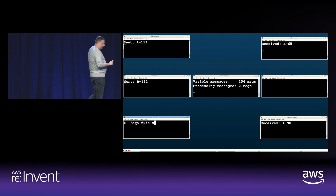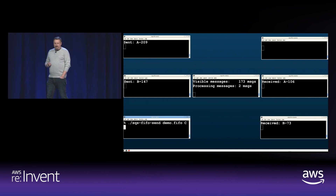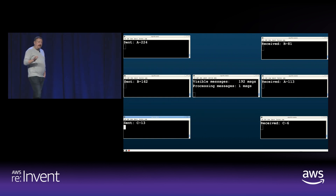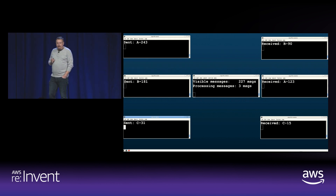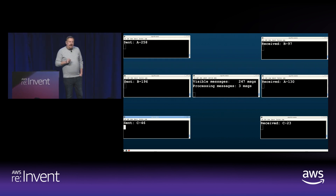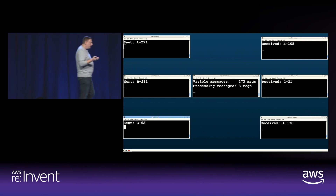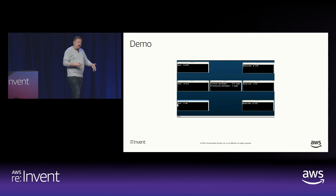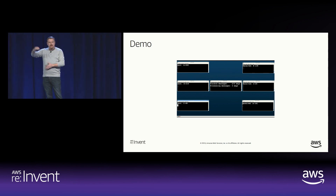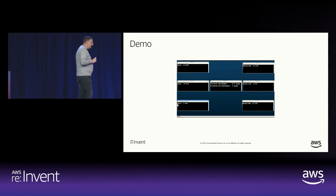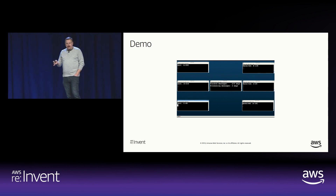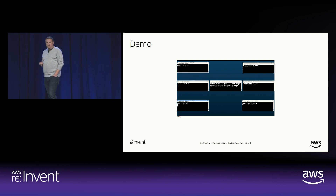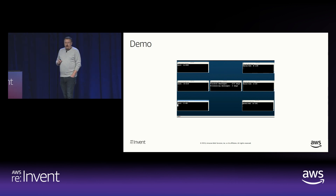A demo shows SQS FIFO behavior. With one producer sending messages labeled A, only one consumer works on the next available message at a time. Starting a second producer with label B creates two groups, so both consumers can work in parallel. Adding a third consumer — with only two message groups — means only two of three consumers are active to preserve ordering. Starting a third producer with label C gives three groups, so all three consumers can do useful work, though group ownership changes dynamically. There is a limitation: a single FIFO queue has a maximum throughput of 300 send, receive, and delete operations per second — or up to 3,000 messages per second with batching.